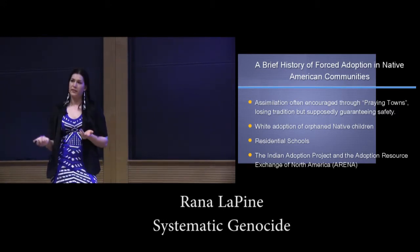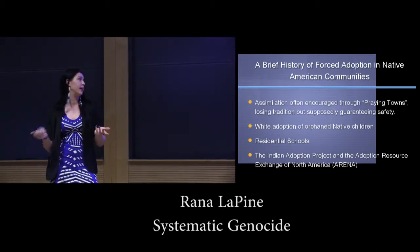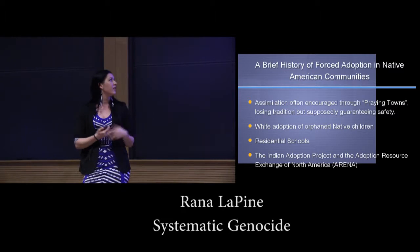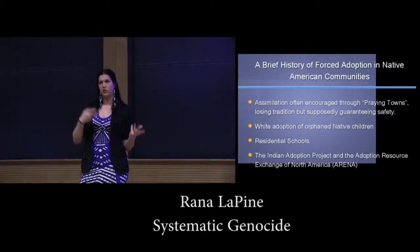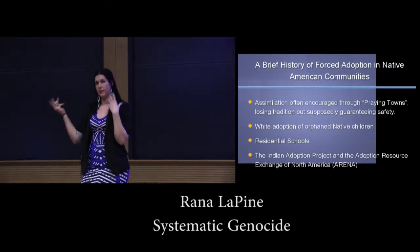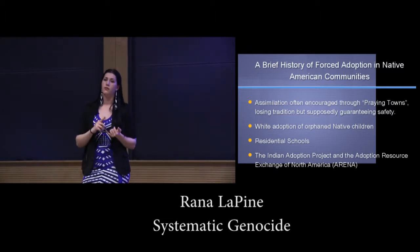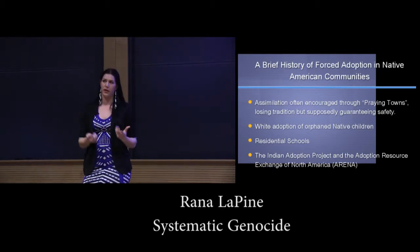Later on, there was a long history of residential schools — these are not as distant as many people think. The last one closed in Canada in 1996, within most of our lifetimes. Residential schools were horrible places. At first, parents thought they were helping their children by sending them there to learn white ways and bring aspects of both cultures together. However, there is a horrible history of physical, sexual, and mental abuse at these schools, and most children were taught to hate who they were and where they came from.